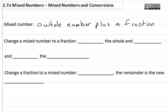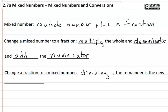We change a mixed number to a fraction by multiplying the whole and denominator and add the numerator. We change a fraction to a mixed number by dividing and the remainder is the new numerator, where the denominator stays the same.